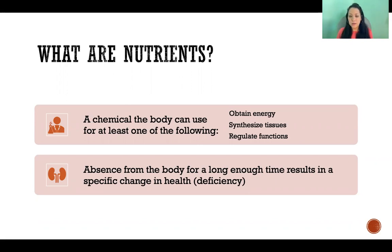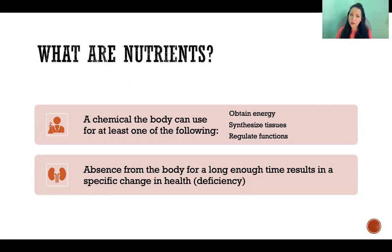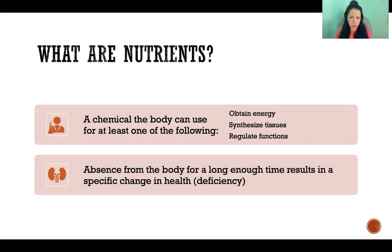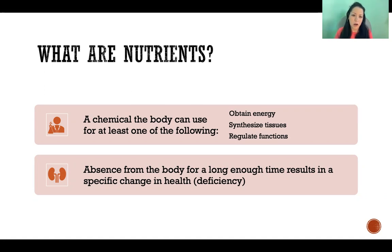An example of that is alcohol. We obtain energy from alcohol — it's not about how you feel, and we know alcohol is a depressant, so it may not make you feel energized — but it contains calories. You are receiving calories by drinking alcohol. But if we never had it again, we're not going to have a deficiency disease. It's not going to make us sick to never have alcohol again, therefore it's not a nutrient.